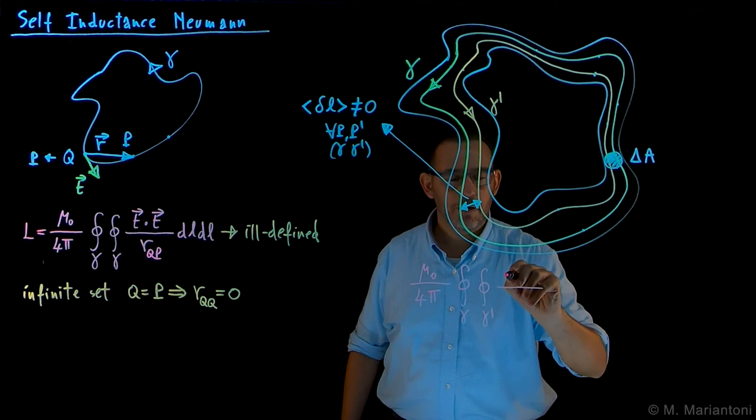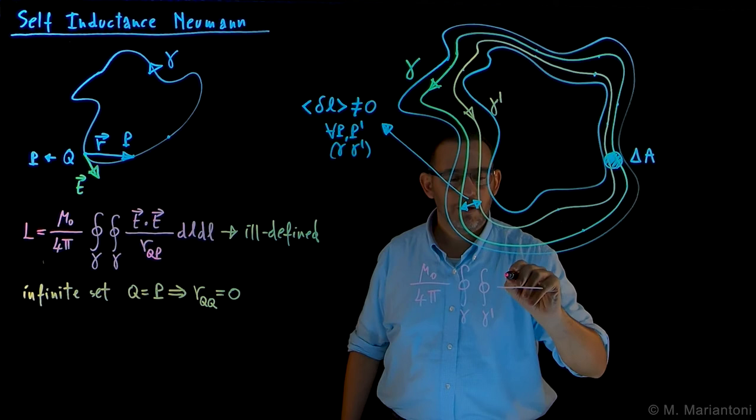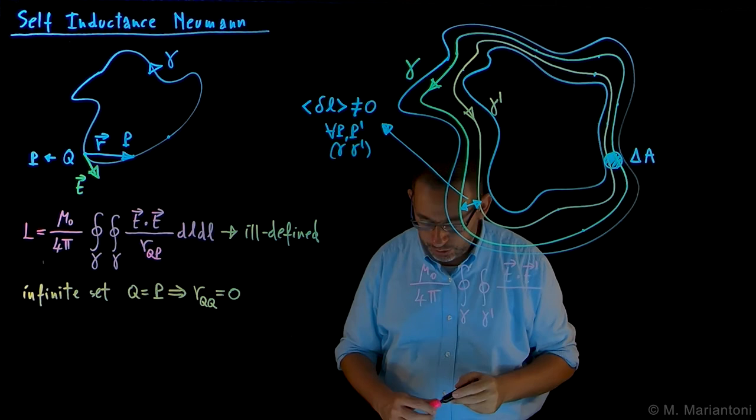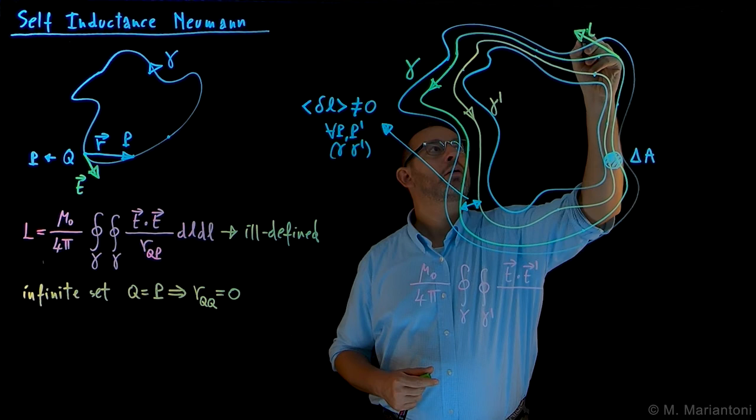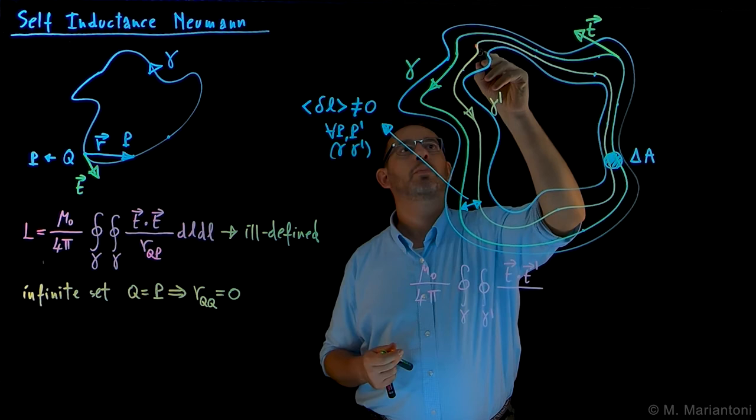Of t dot t prime, which are the tangent unit vectors. This one would be t, and this one would be t prime. For example, here, this would be t prime, for gamma and gamma prime respectively.